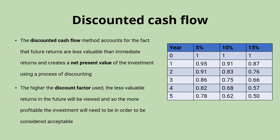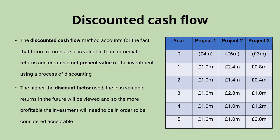The table here shows you the figures that you would need to calculate discounted cash flow for an investment providing returns over a five year timeline. Included are the 5 percent, 10 percent and 15 percent discount factors. We'll now use the 10 percent discount factor to compare three different investment projects: project one costing four million, project two costing six million, and project three costing three million pounds, all providing returns shown over five years.